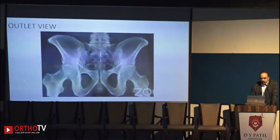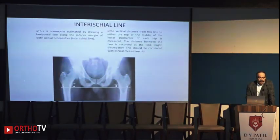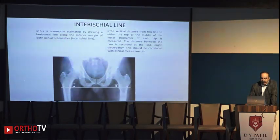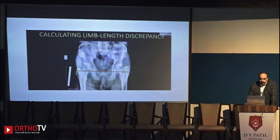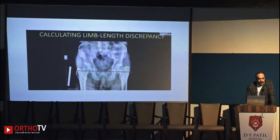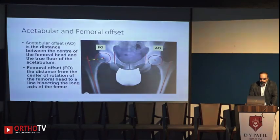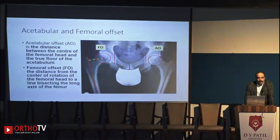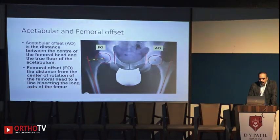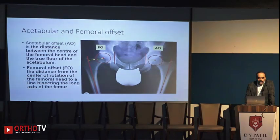There are two lines we need to draw: the inter-ischial line, drawn from the lower end of the ischial tuberosities, and the teardrop line, drawn from the inferior edge of both teardrops. Both are required to assess limb length. Acetabular offset is the distance between the center of the femoral head and the true floor of the acetabulum, whereas femoral offset is the distance from the center of rotation of the femoral head to a line bisecting the long axis of the femur.